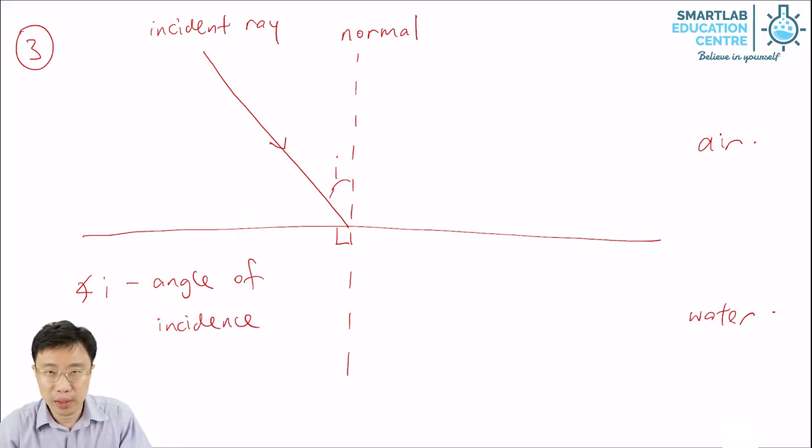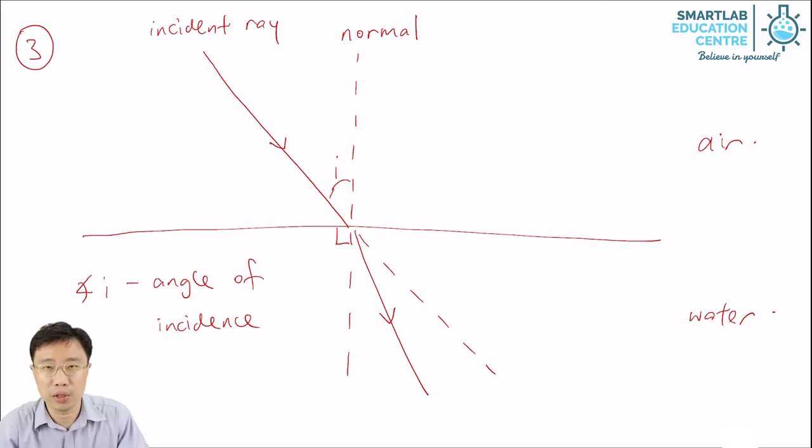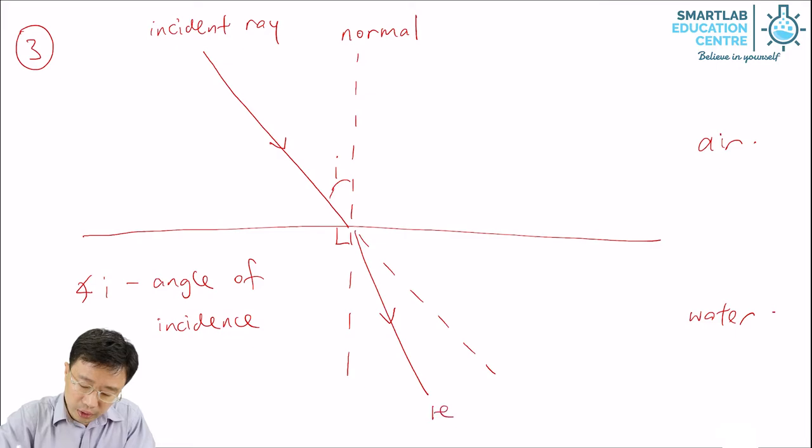Now if there is no bending, light will just go straight like this. But because the speed of light changes as it goes from air to water, the ray of light will bend. In this case, it will bend towards the normal. This ray of light is called the refracted ray.